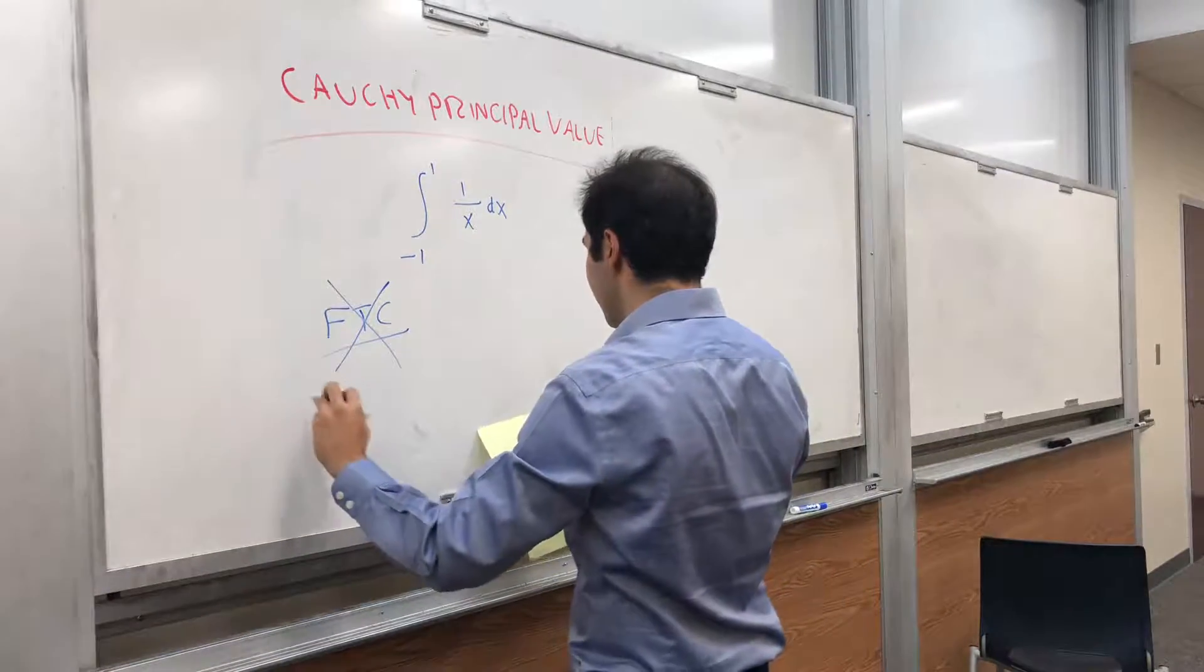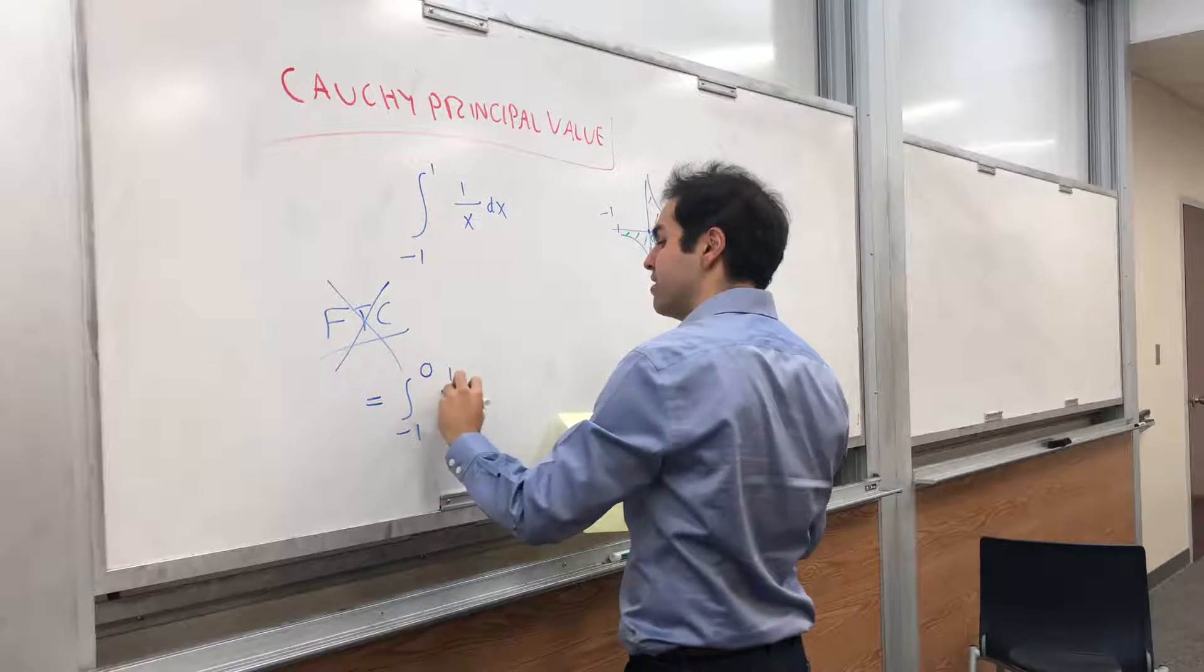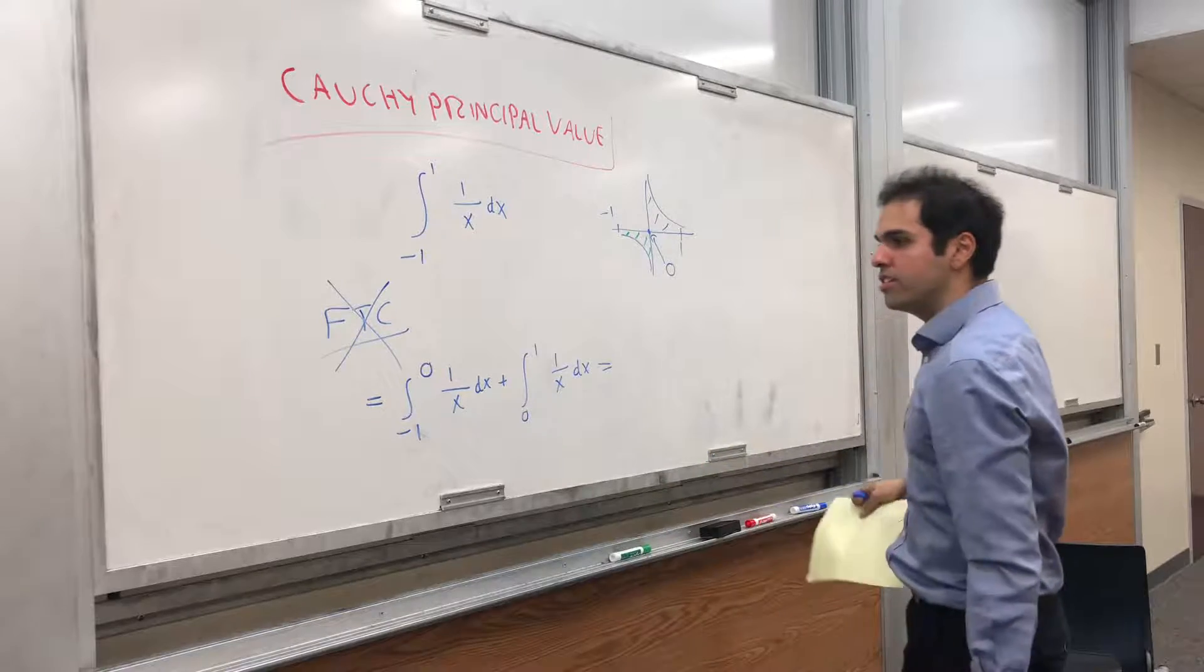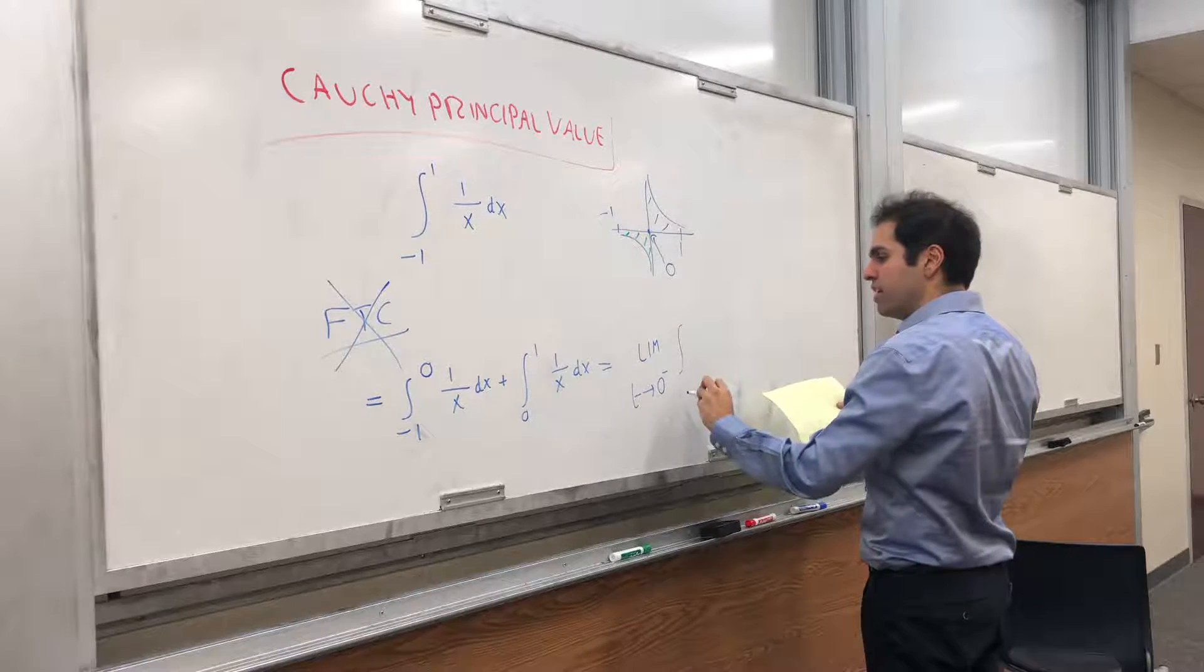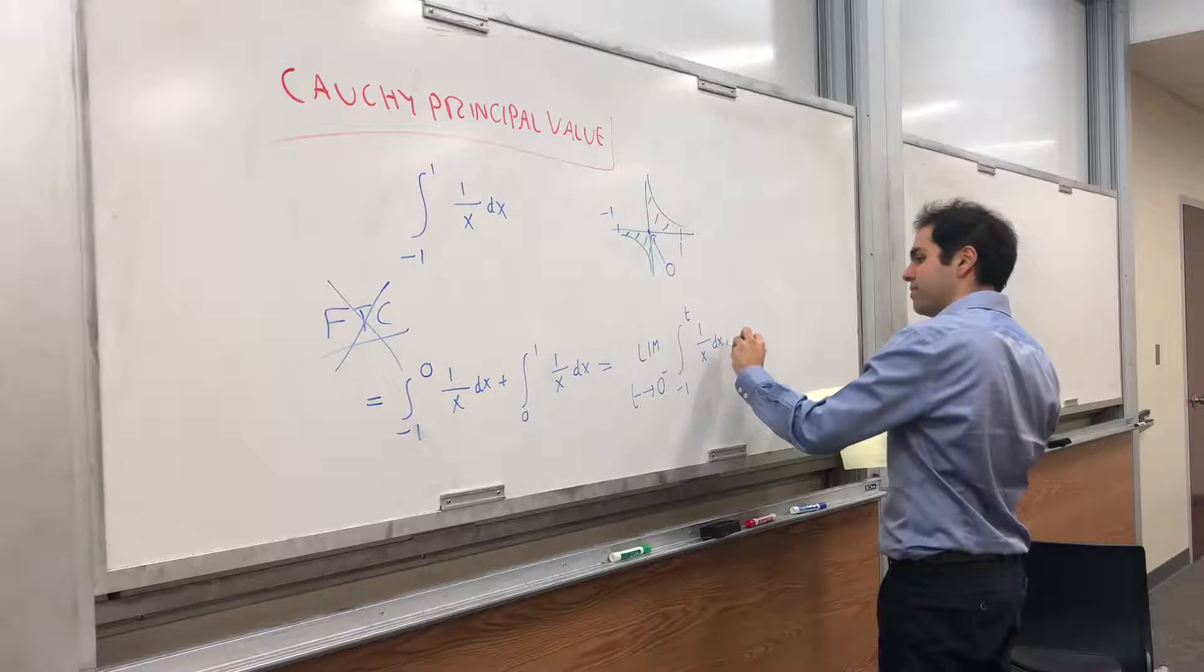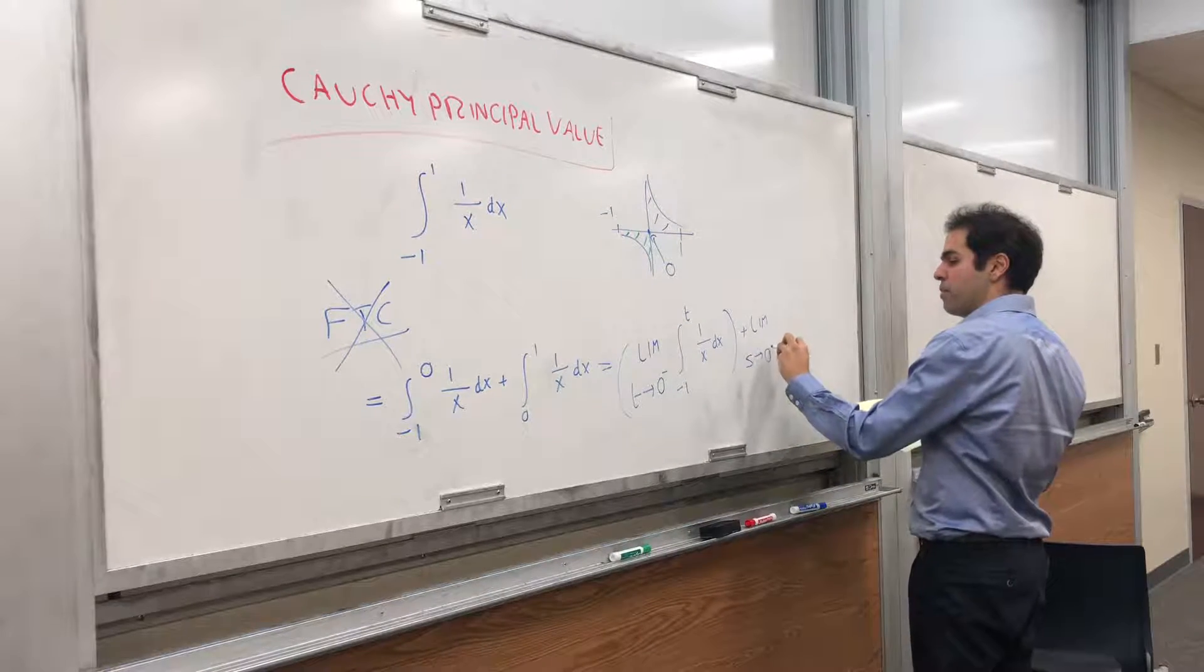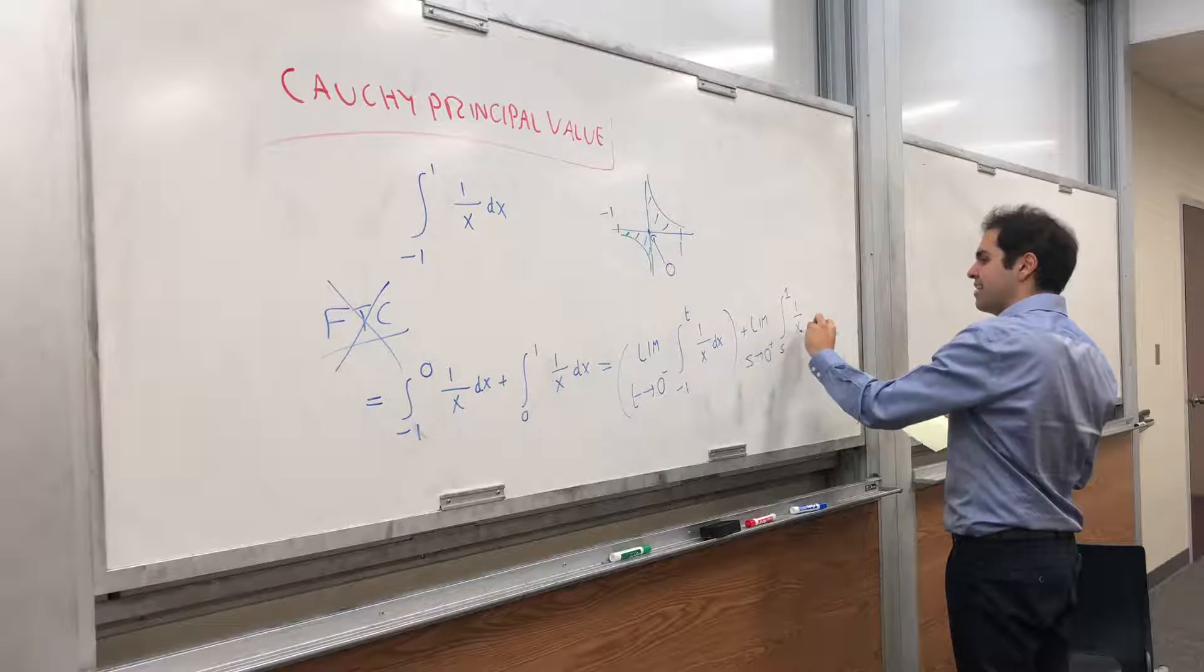So the correct way of doing this would be to split this up at 0, since it has a discontinuity at 0, and evaluate each integral separately. And what this really means is you take the limit as t goes to 0 minus of the integral from minus 1 to t of 1 over x dx plus the limit as s goes to 0 plus from s to 1 of 1 over x dx.